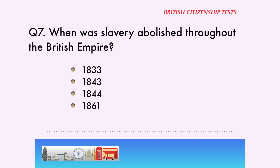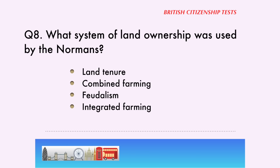Question 7. When was slavery abolished throughout the British Empire? 1833, 1843, 1844, 1861. The correct answer is... 1833.